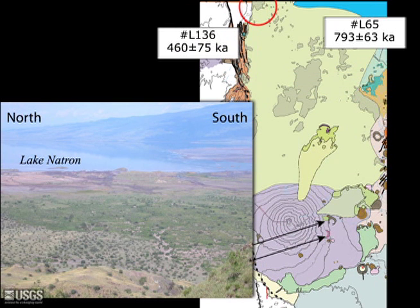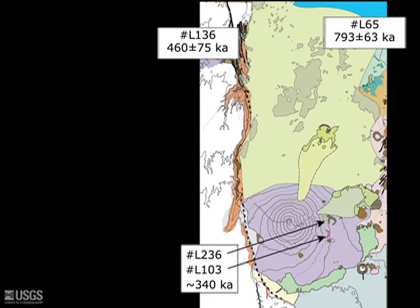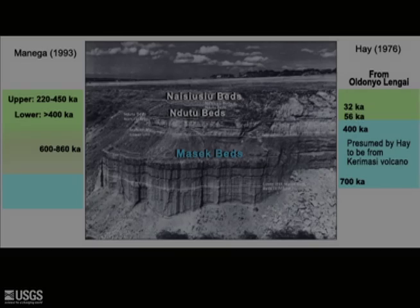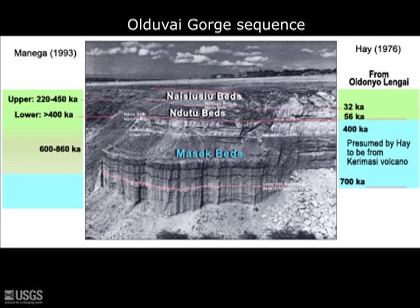Making sense of the ages of random blocks within a debris avalanche deposit is difficult at best, but we suggest the 460,000-year age and perhaps the 793,000-year age are tied to Ol Doinyo Lengai itself. Support for a long-lived Ol Doinyo Lengai comes from revisiting the Olduvai Gorge area 70 kilometers downwind. It was there that Richard Hay, in 1976, interpreted tephras from sedimentary Ndutu beds as having originated from Ol Doinyo Lengai, hence the interpretation that Ol Doinyo Lengai began its eruptive history less than 400,000 years ago, after deposition of the underlying Masek beds. Single crystal laser fusion ages obtained by Palmanega in 1993 from the base of the Ndutu beds suggest at least a 500,000-year age onset for Ol Doinyo Lengai.